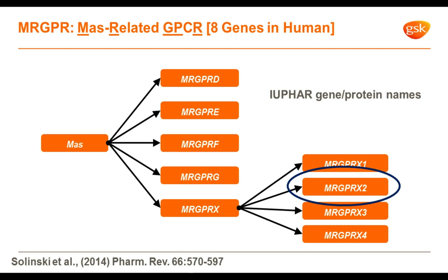The receptor in question is a member of a family of eight related genes in human — the situation in rodents is a little different, as we'll see. These receptors have some sequence similarity to a very famous orphan receptor known as MAS, and that's where their name comes from: MRGPR, standing for MAS-related G-protein coupled receptor. There are four receptors — D, E, F, and G — and then there's MRGPRX, which is a subfamily of four different receptors: X1, X2, X3, and X4. The receptor we'll talk about most today is X2.